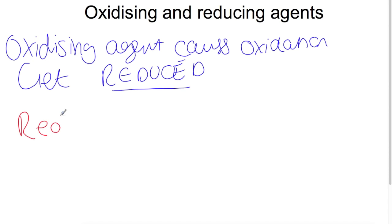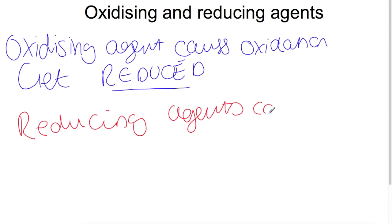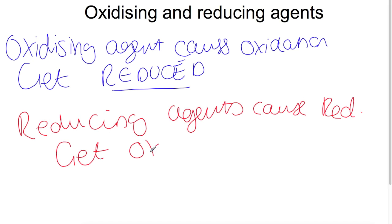Reducing agents cause reduction. As they cause reduction and cause something else to gain electrons, they themselves are oxidised to produce those electrons. If you are looking for an oxidising or reducing agent you should look on page 12 of the data book.